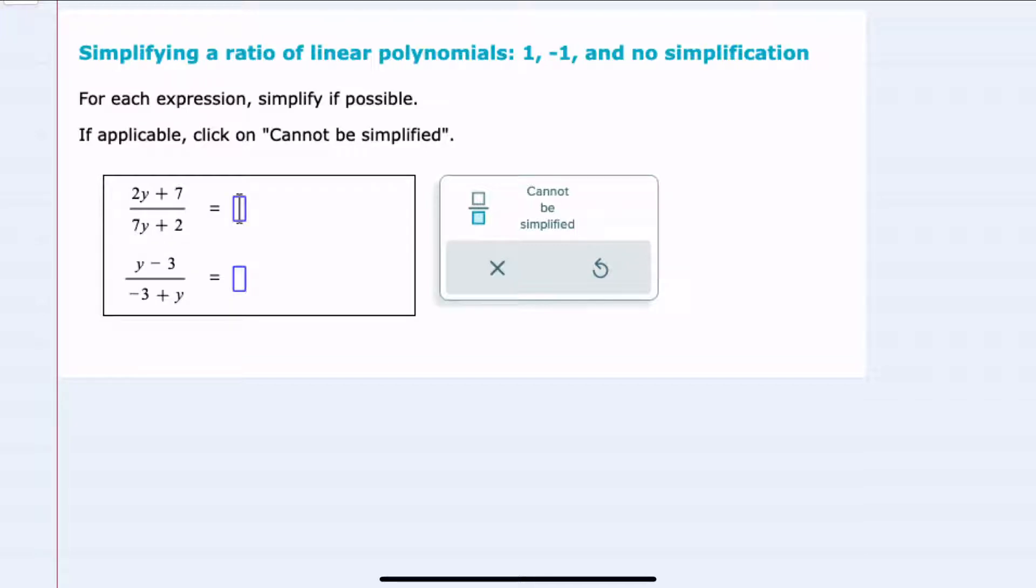We're given here two expressions to simplify. The first one has 2y plus 7 in the numerator, 7y plus 2 in the denominator. And while it's tempting to try to cancel something here, I could only cancel if there was a factor in the top and the bottom that was exactly the same.